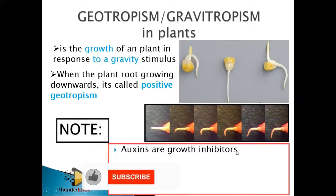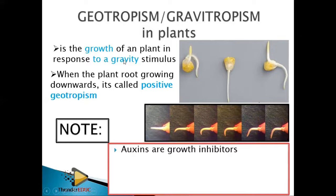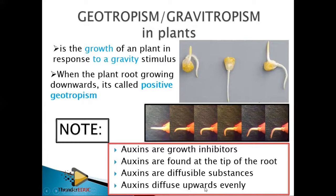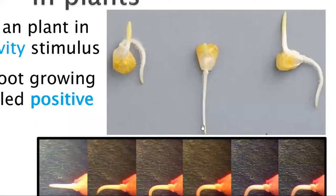You need to note: auxins are growth inhibitors in the case of geotropism. Geotropism works in the opposite way to phototropism — in phototropism, auxins promote growth, while in geotropism, auxins inhibit growth in roots. Auxins are found at the tip of the root, they are diffusible substances, and in the case of the root, auxins diffuse upwards evenly.